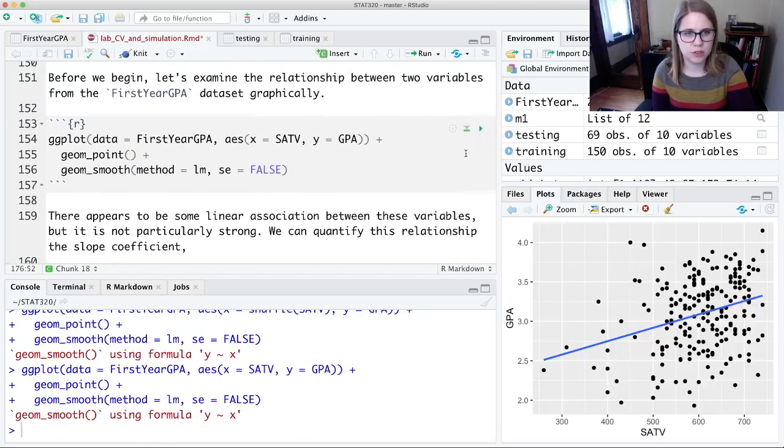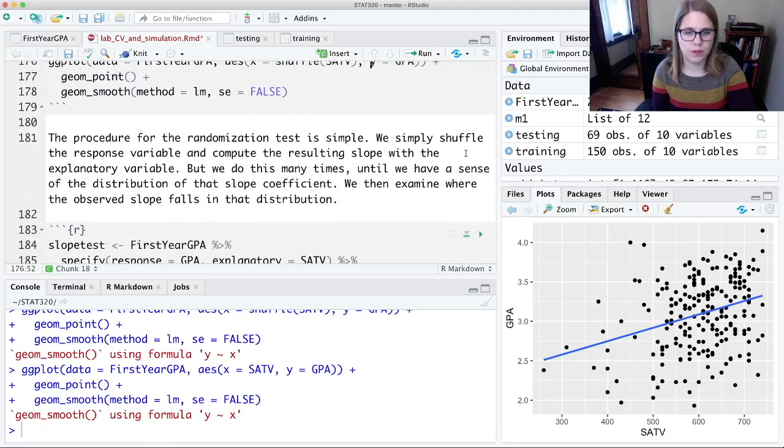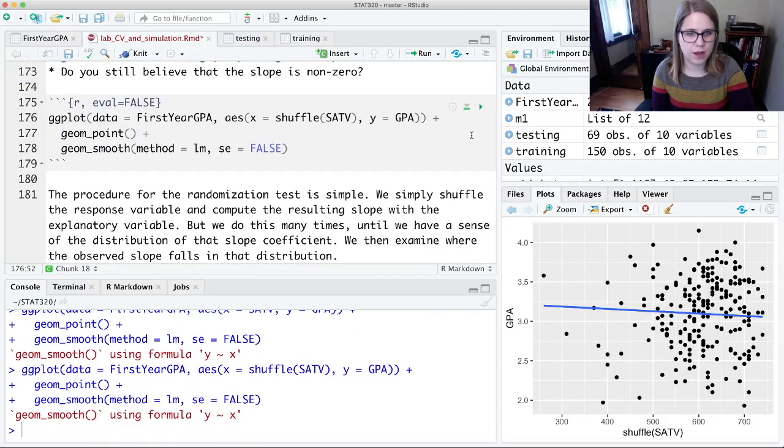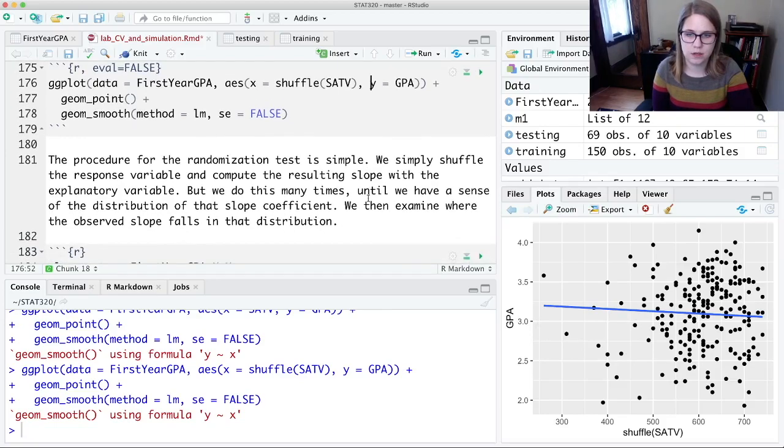I still think that the slope that we saw in the first one still looks pretty different from the ones that we've been getting when we shuffle randomly. So I think that this is still going to be significant with a randomization test, but we're going to do the randomization procedure.